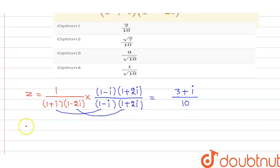So z is equal to (3+i)/10. So basically mod z is equal to 1 upon 10, root of 3 squared plus 1 squared, that is equal to 9 plus 1, that is equal to 1 upon root 10.